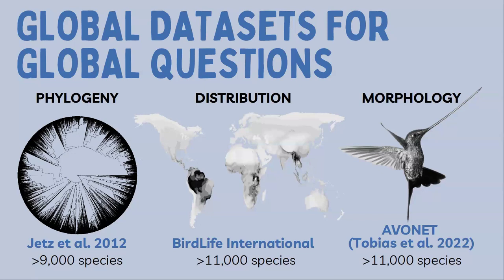Thanks to any birders here using recording apps, we have great distribution data for birds — over 11,000 species collated by BirdLife International, meaning anywhere on the planet we have a reasonably good guess at what birds are living there.